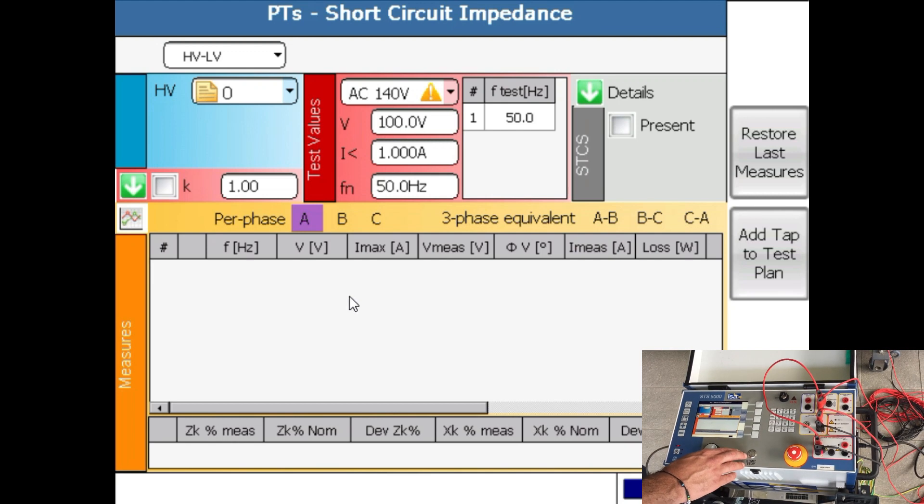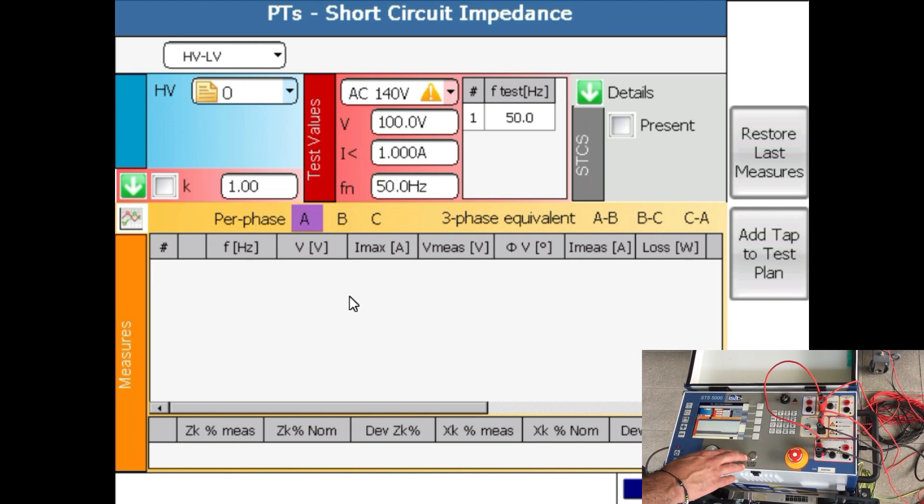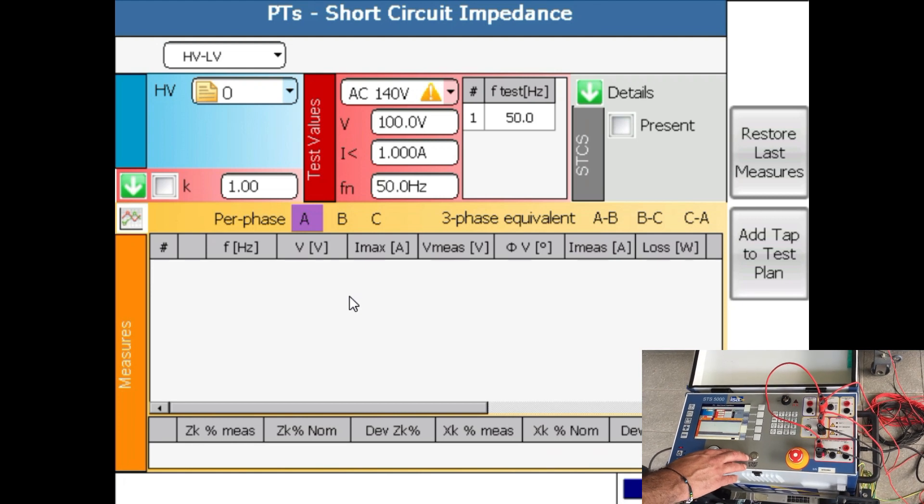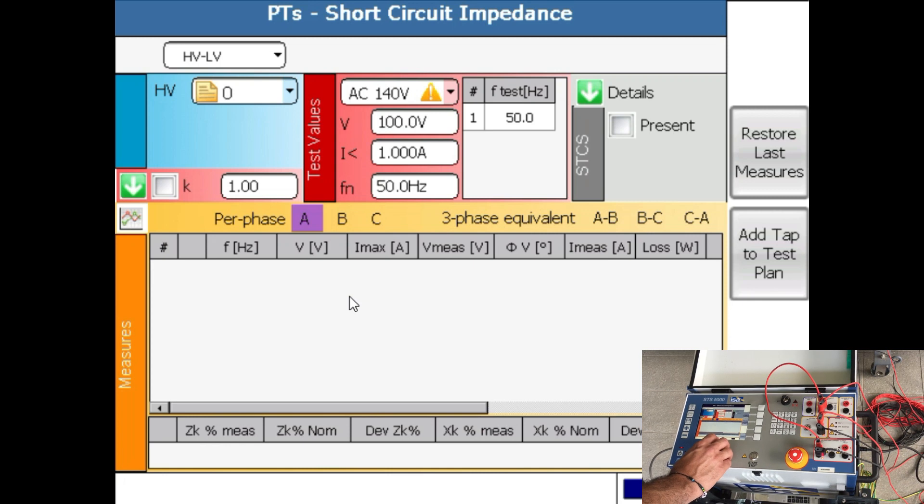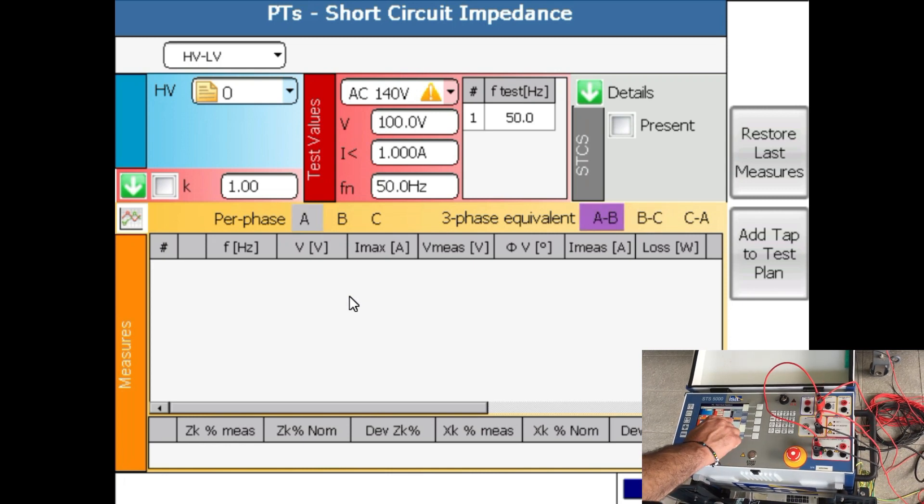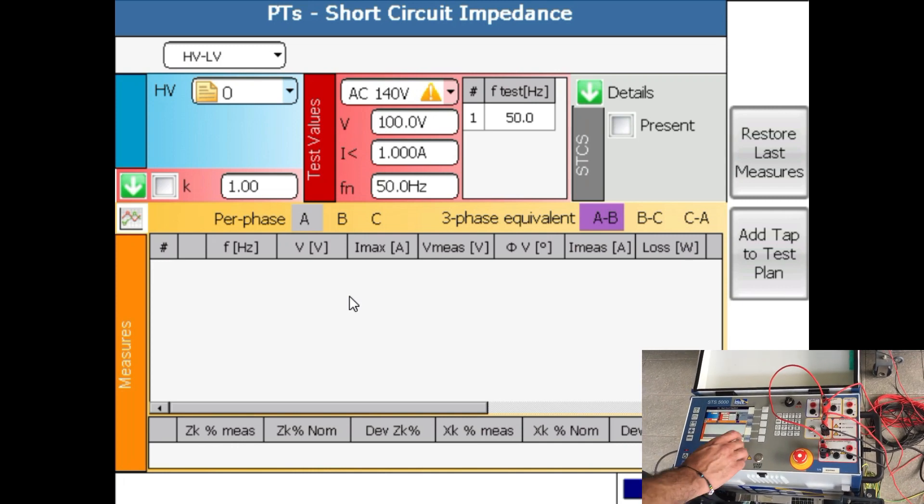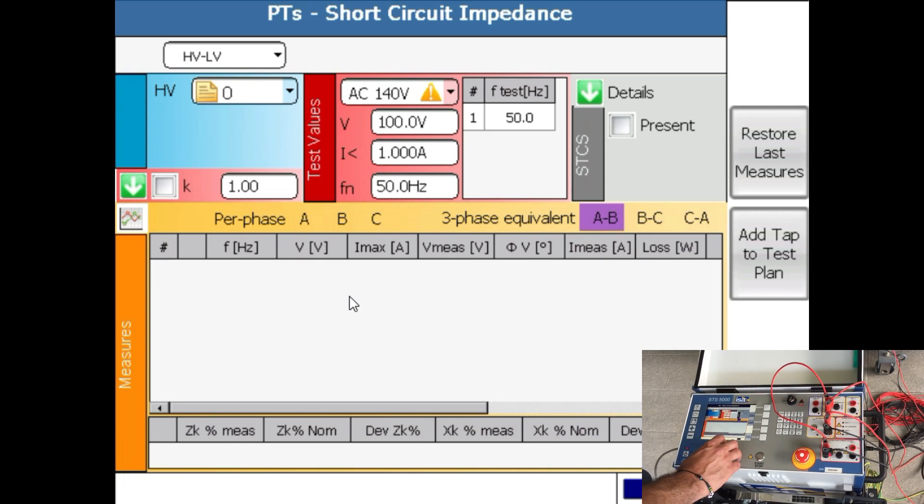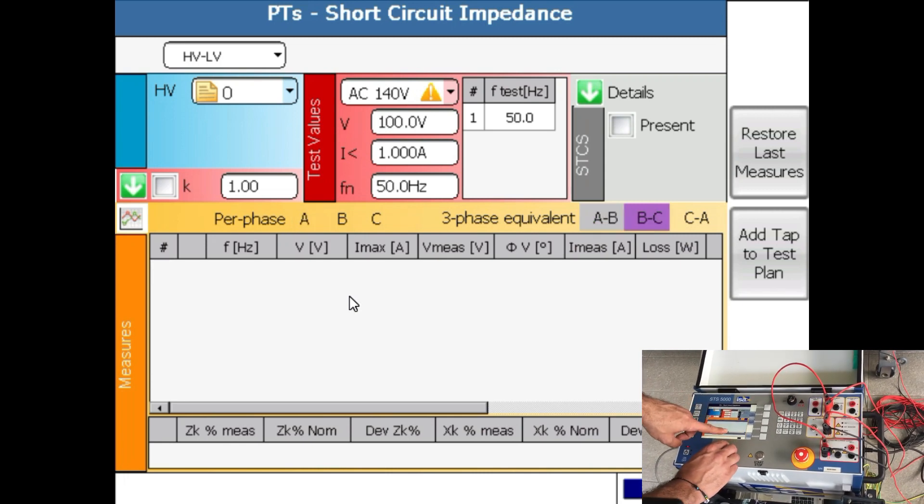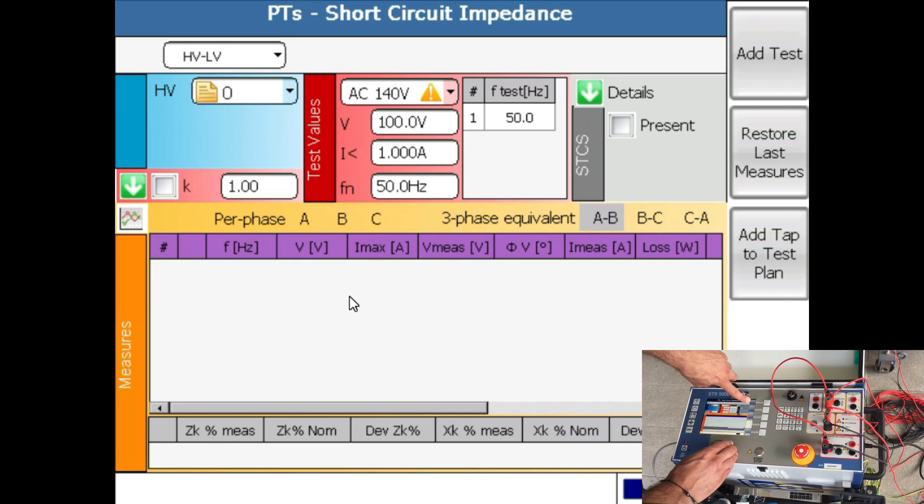Per-phase can be used only if you have YY or YNY or YN or YYN or YNY transformer. So I'm now choosing AB because I'm connected to phases AB and I will have to repeat this test three times for BC and for CA if I'm not using STCS. Then you move your cursor all the way to here and then you get an option add test.